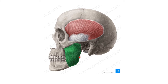The masseter muscle is a powerful, strong quadrangular muscle. It originates from the lower aspect of the zygomatic arch and inserts at the angle and lateral surface of the mandibular ramus. It is one of the strongest muscles acting in mastication.